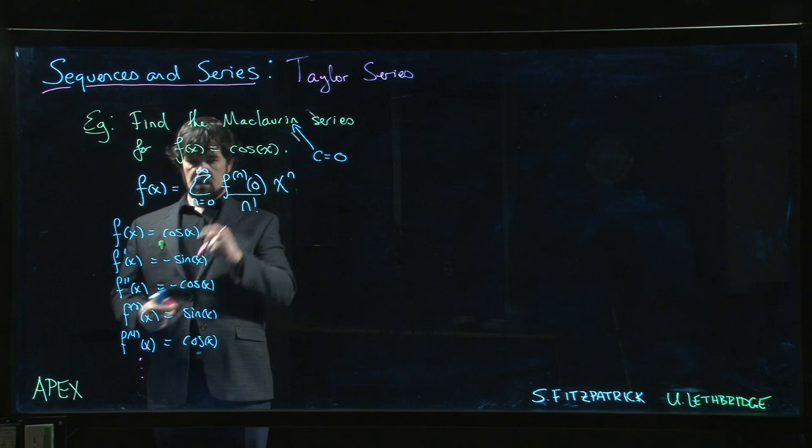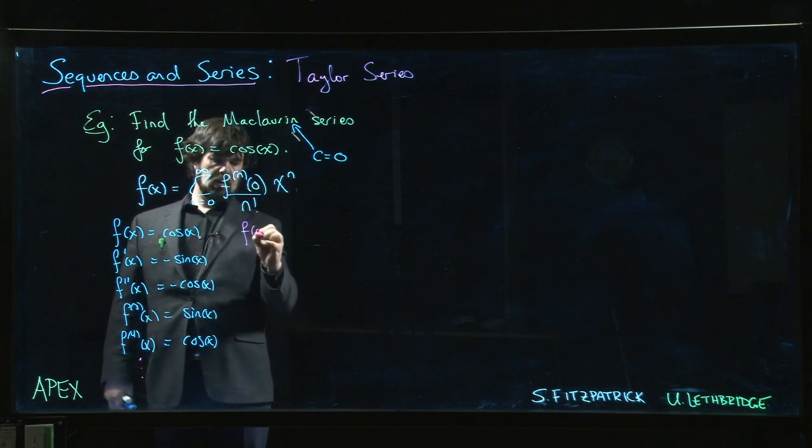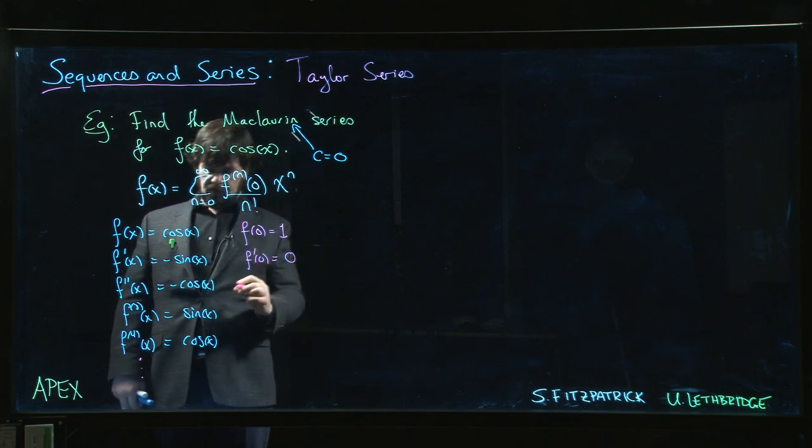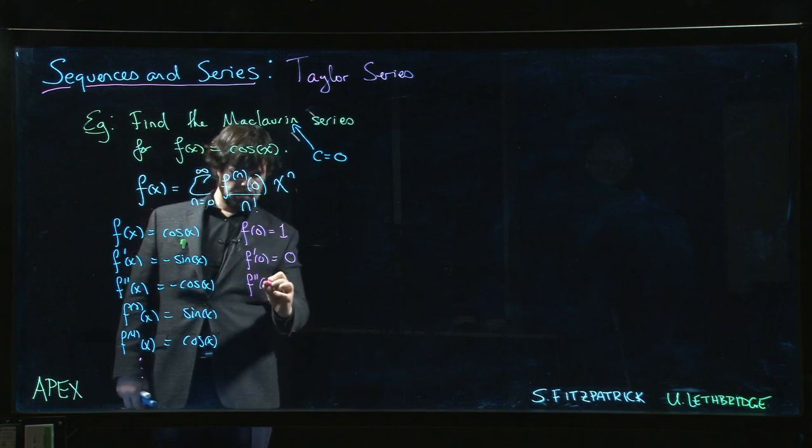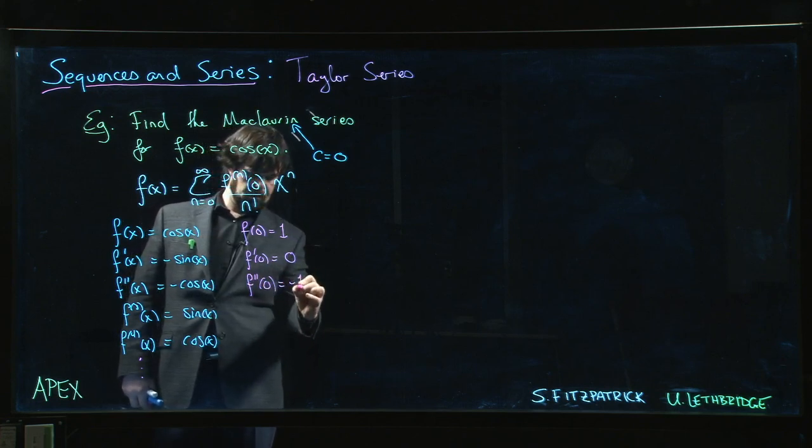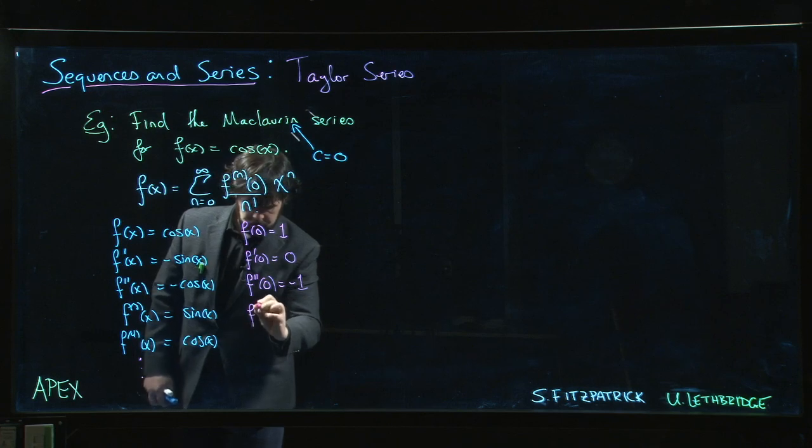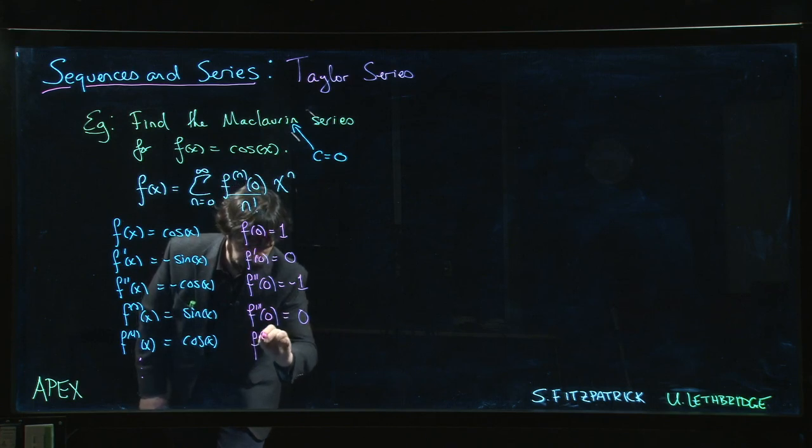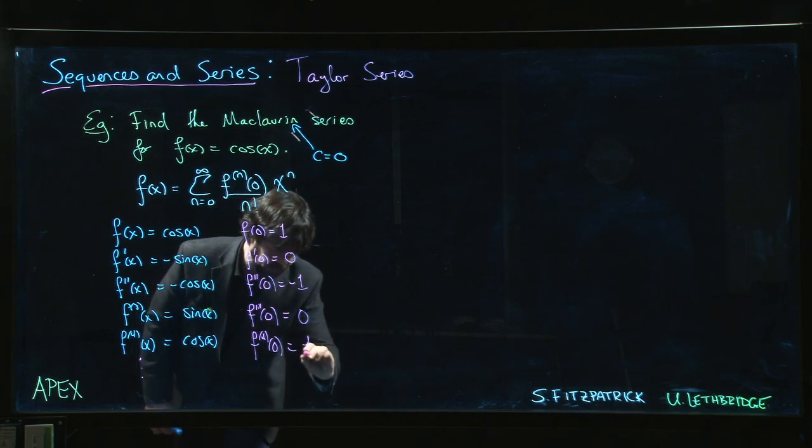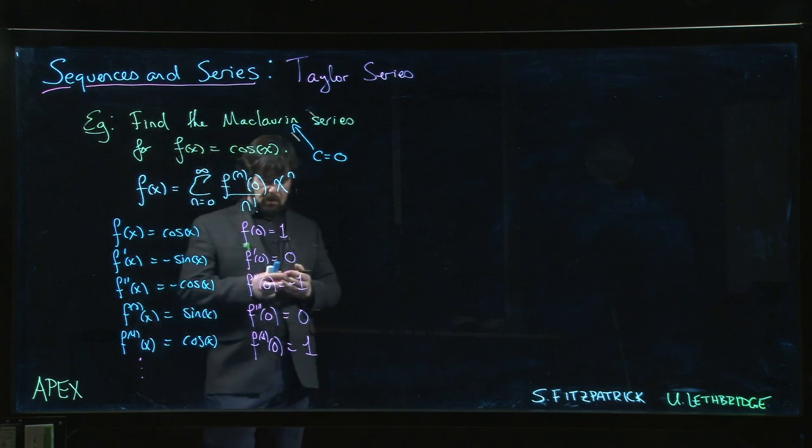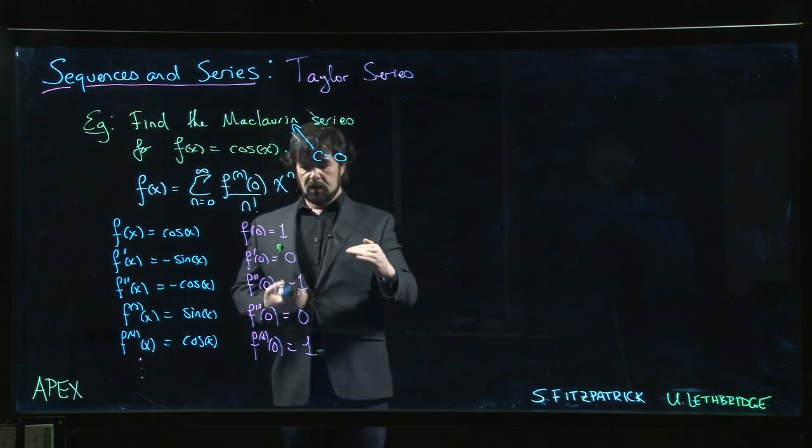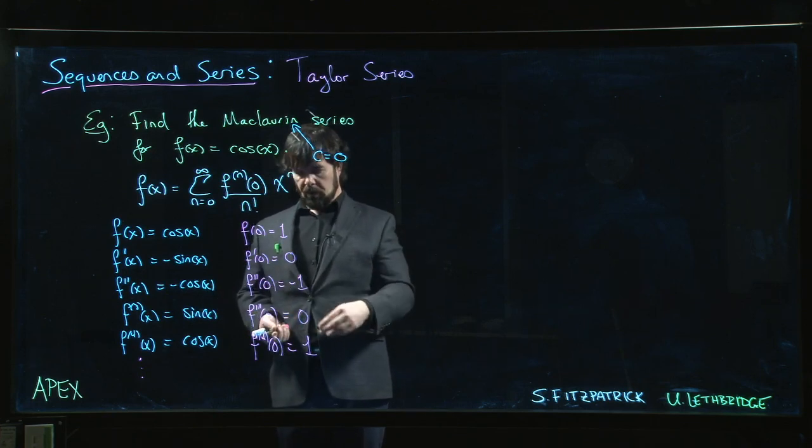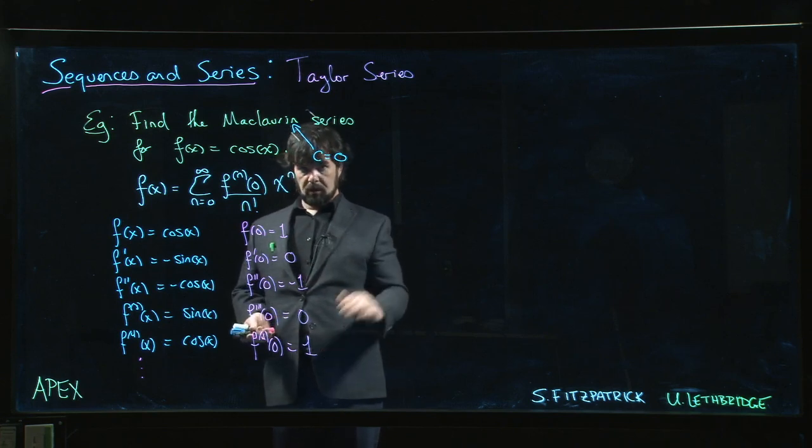So now we plug in 0. We've got to evaluate it at 0. f of 0, cosine of 0 is 1. f prime is 0. f double prime is minus 1. f triple prime, 0 again. Fourth derivative, back to 1. So you can work out that the derivatives are always going to follow this pattern. You probably already saw this when you were looking at Taylor polynomials, Maclaurin polynomials: 1, 0, minus 1, 0, 1, 0, minus 1, 0.